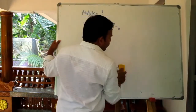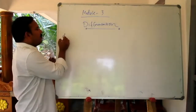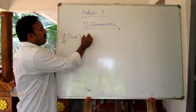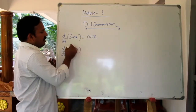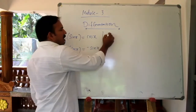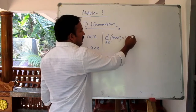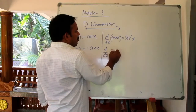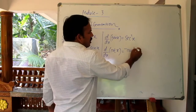Now, trigonometric differentiation. d by dx of sin x equals cos x. d by dx of cos x equals minus sin x. d by dx of tan x equals sec squared x. d by dx of cot x equals minus cosec squared x.